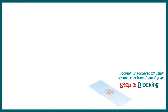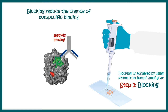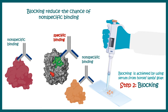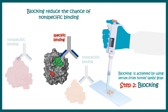The next step is to perform blocking. Blocking is often done with horse or lamb serum, and the key goal of blocking is to reduce the chances of non-specific binding and to promote specific binding.